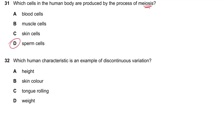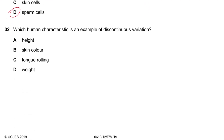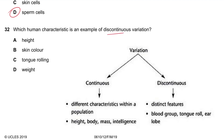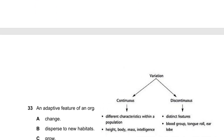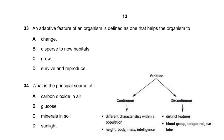Question 32: Which human characteristic is an example of continuous variation? Height can range from 150 cm, 152, 153, 153.5 — a continuous range. Skin color has many tones. Weight can be in decimal points. Tongue rolling is either yes or no — only two options — so that is discontinuous. The continuous examples are height, skin color, and weight.